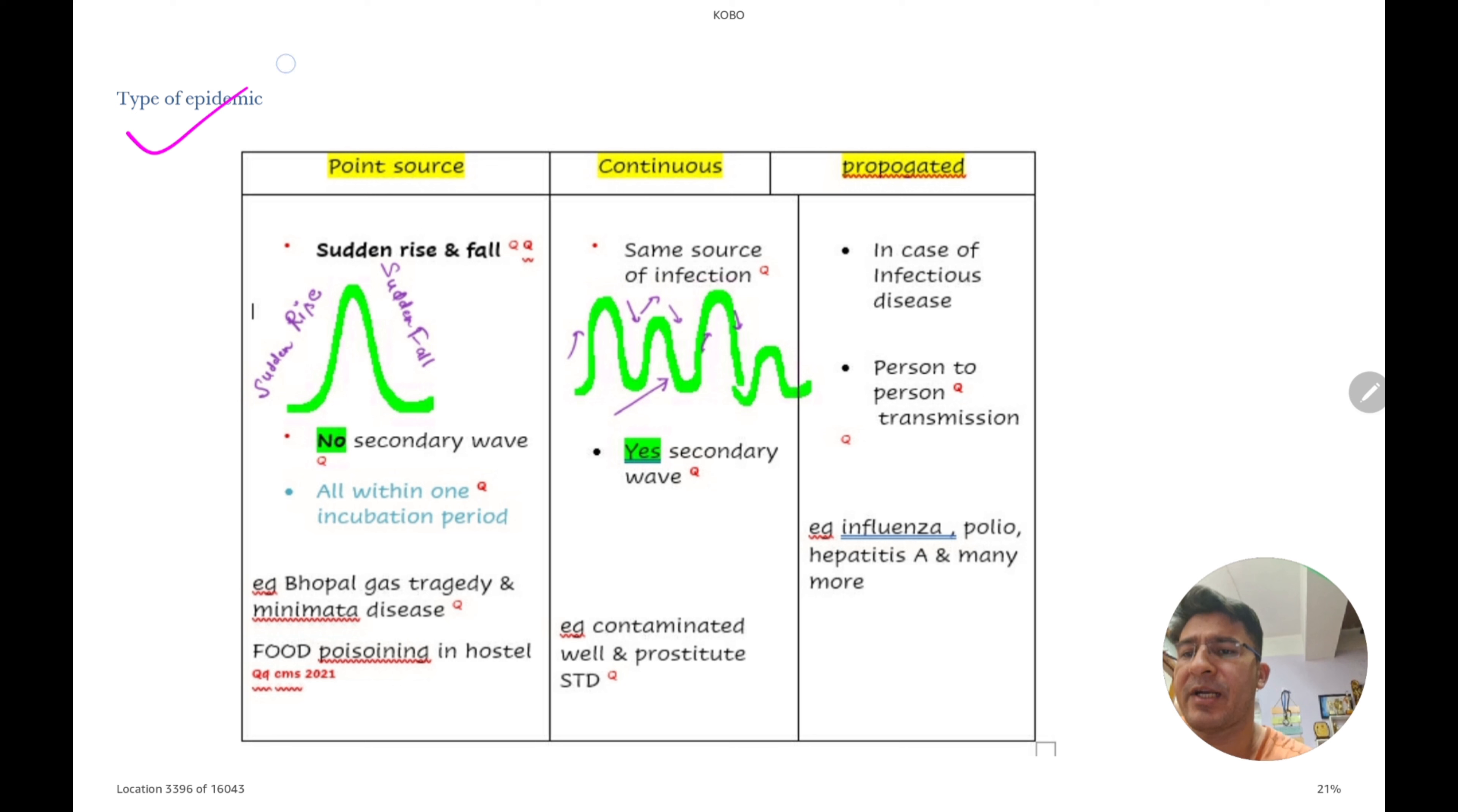Now type of epidemic, very important. Point source, continuous, propagative. So point source ka matlab hai sudden rise, sudden fall. Koi bhi secondary wave nahi hoti. Question: Secondary wave nahi hoti iska matlab kya hua? Saara ka saara infection all within one IP, within one incubation period. Means ek saath aya, ek saath chala gaya. So jaise Bhopal gas tragedy. Matlab sudden koi chij hui, aur woh khatam ho gayi. Food poisoning.